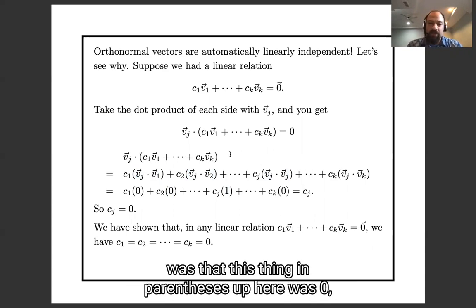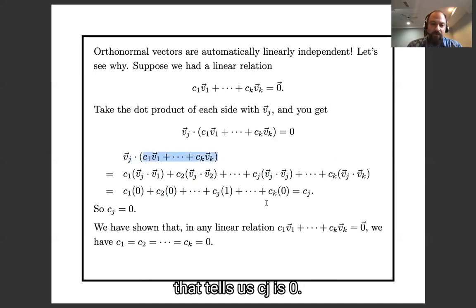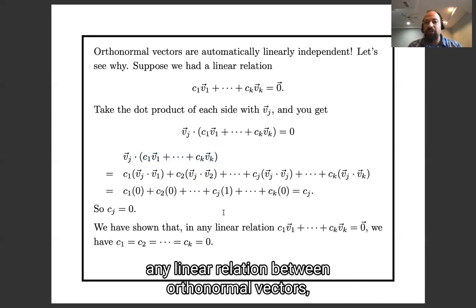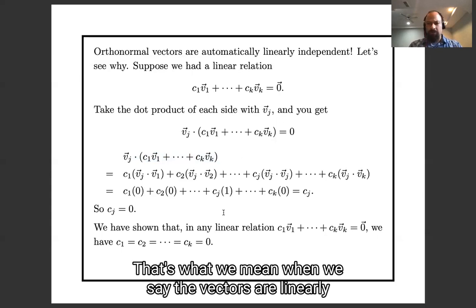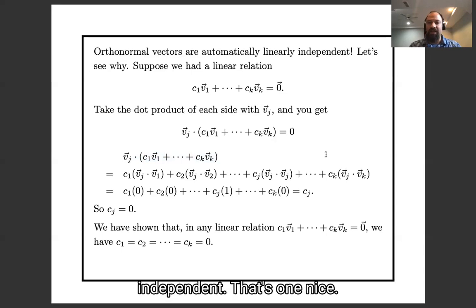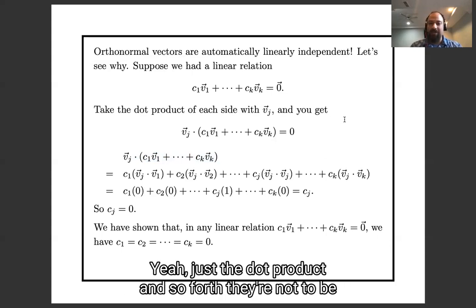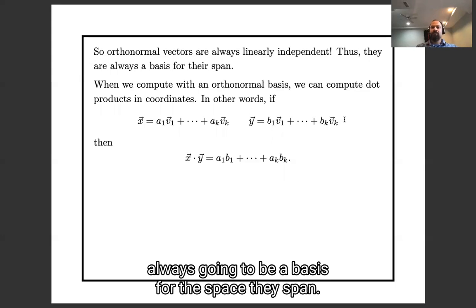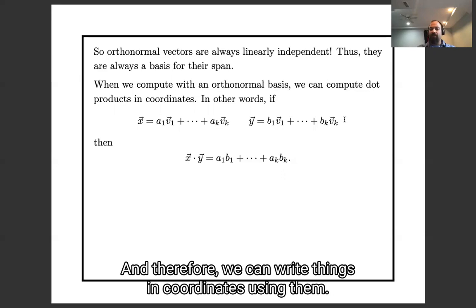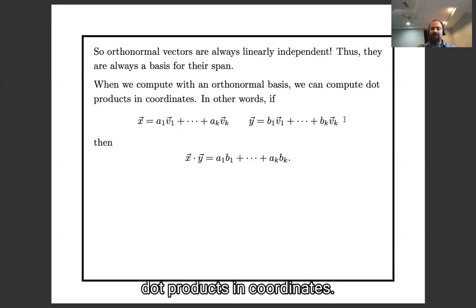So we compute that vj dot this whole messy thing is cj. And hence, since our assumption was that this thing in parentheses was zero, that tells us cj is zero. So we've shown that if we have any linear relation between orthonormal vectors, all the coefficients must be zero. That's what we mean when we say the vectors are linearly independent. So that's one nice thing about orthonormal vectors - we don't have to worry about whether there are any redundancies between them. Which means there's always going to be a basis for the space they span, and therefore we can write things in coordinates using them. And the great thing about them is that we can compute dot products in coordinates.